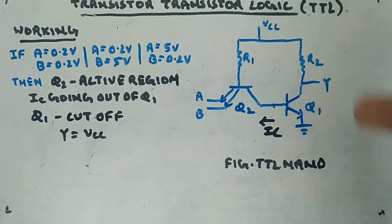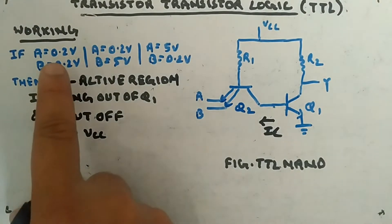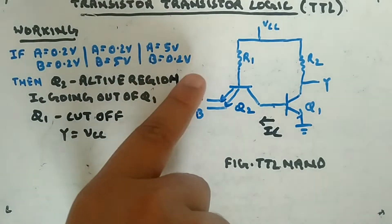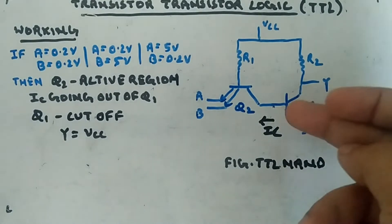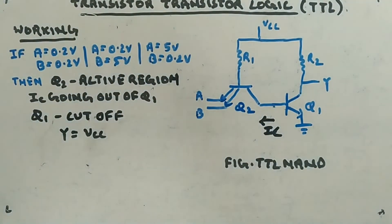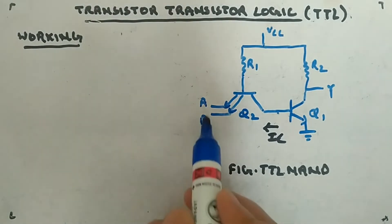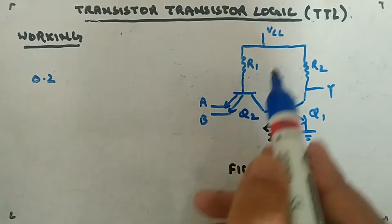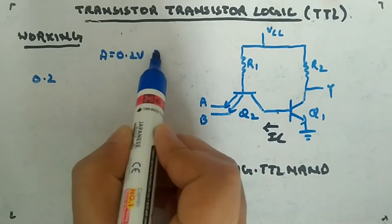Q1 going to cutoff means VCC appears at Y — output Y equals VCC (logic high). This happens in any of the three cases: A=0, B=0; A=0.2V, B=5V; or A=5V, B=0.2V. In all three cases, Q2 is in active mode and Q1 is in cutoff, so output is high. Now let's understand the active region analysis more clearly with A=0.2V and B=5V.